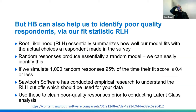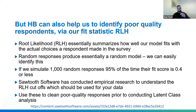Hierarchical Bayes estimation also allows us to identify poor quality respondents via a fit statistic called RLH — root likelihood — which summarizes how well our model fits the actual choices a respondent made. Random responses produce a random model, and we can identify whether someone was answering randomly by checking whether our model is no better than random chance. Sawtooth Software's empirical research found that 95% of the time, 1,000 random responses produce an RLH score of 0.4 or less. Keith and the team have run this across many studies and provided a reference list at the link below to help clean poor quality responses prior to latent class analysis.